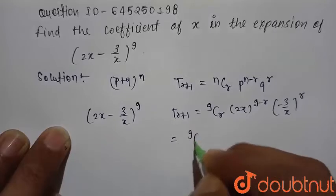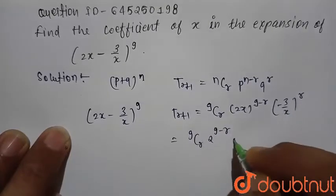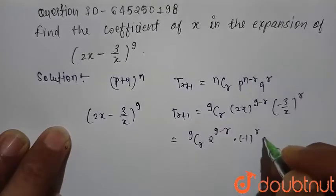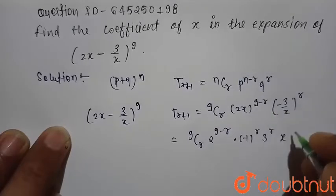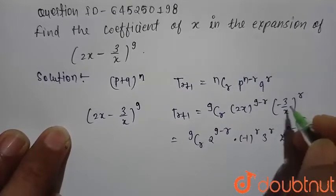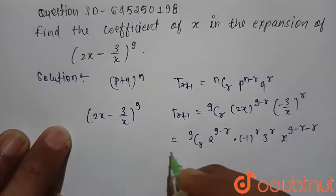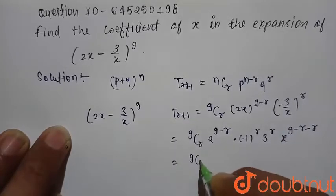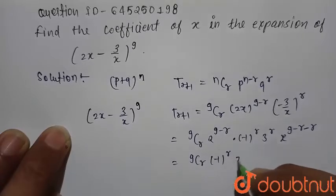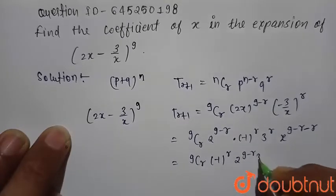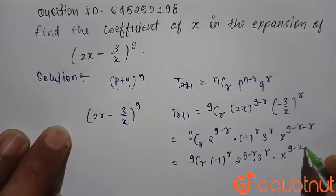This is equal to 9Cr × 2^(9−r) × (−1)^r × 3^r. We can write x^(9−r) × x^(−r) = x^(9−2r). So the general term simplifies to 9Cr × (−1)^r × 2^(9−r) × 3^r × x^(9−2r).